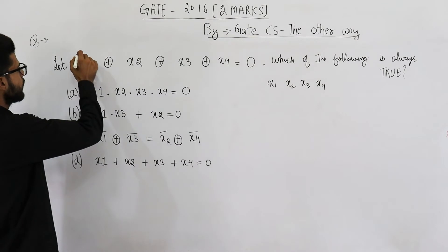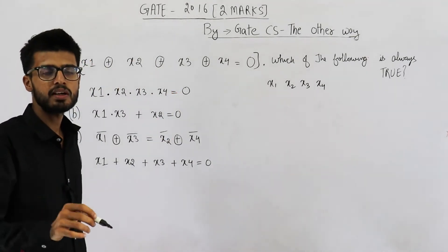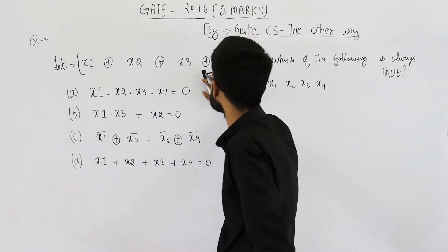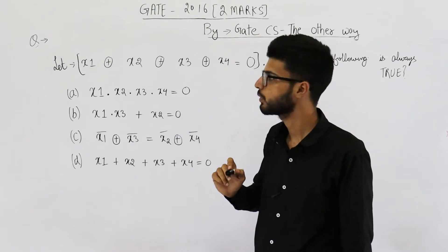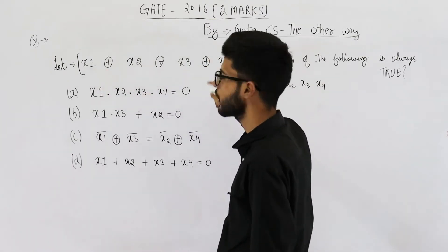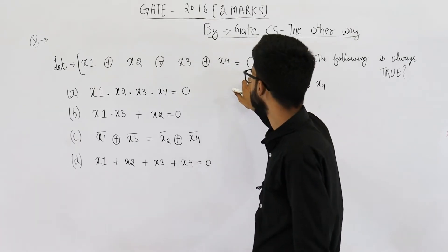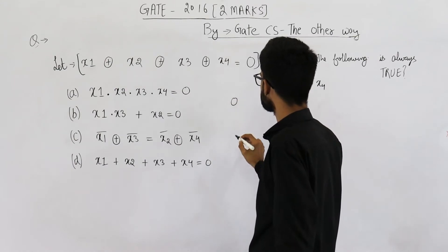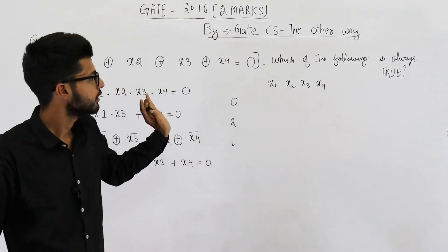First of all, let's find out under what conditions this equation will be valid. We have four inputs and we are taking their XOR. XOR outputs high whenever an odd number of inputs are high. Say three of them are high — the output will be one. But here we want the output to be low, so the condition is an even number of inputs should be high. That means either zero inputs are high, two inputs are high, or all four inputs are high.